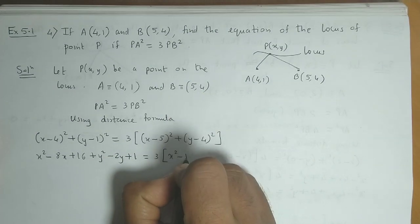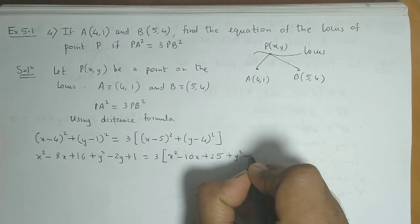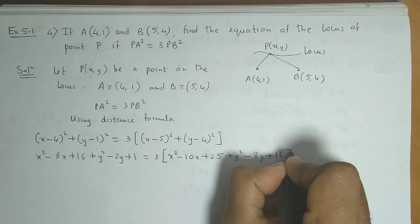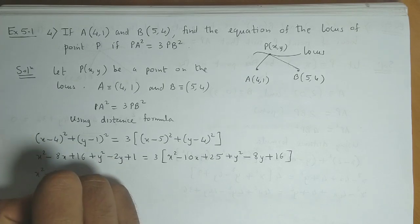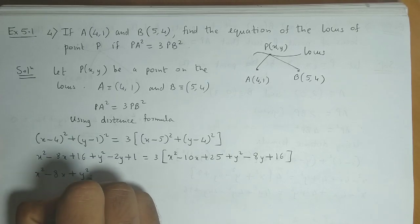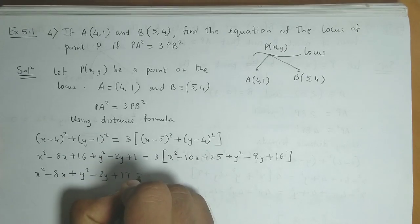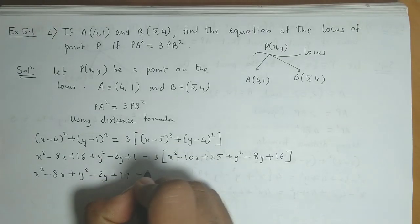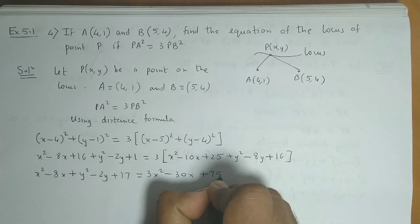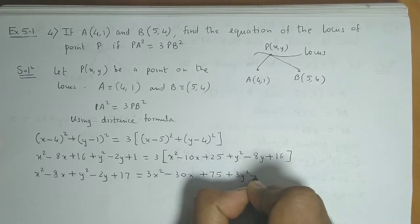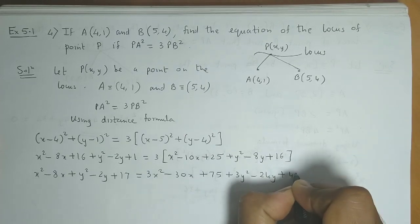This is equal to 3 times — expanding the bracket — x squared minus 10x plus 25 plus y squared minus 8y plus 16. So on the left side we have x squared minus 8x plus y squared minus 2y plus 17, and we multiply the entire right bracket by 3, giving 3x squared minus 30x plus 75 plus 3y squared minus 24y plus 48.